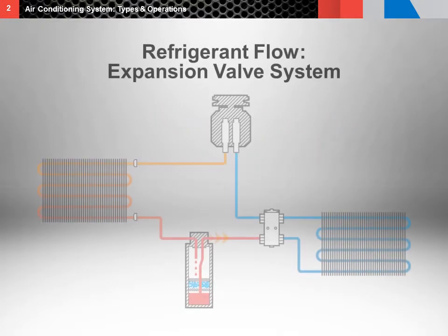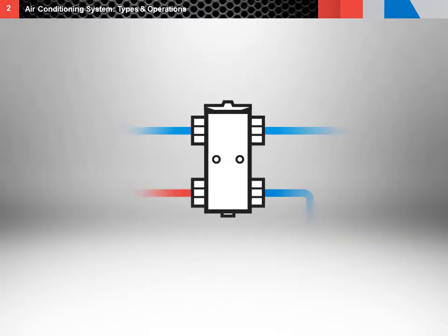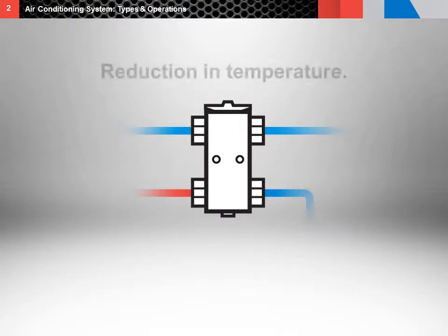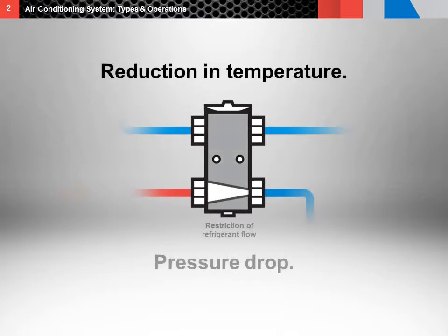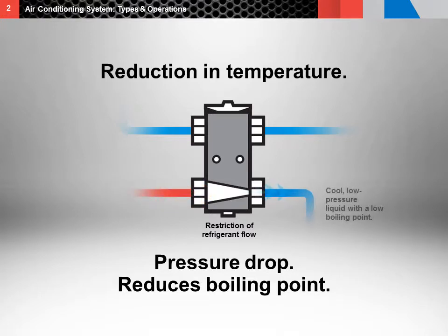The refrigerant flows from the outlet of the receiver dryer into the inlet of the expansion valve. As the refrigerant passes through the expansion valve, it changes from a hot, high pressure liquid to cold, low pressure liquid. The reduction in temperature is the direct result of the system pressure drop caused by the restriction of refrigerant flow. The lower pressure also reduces the boiling point and temperature of the refrigerant. The result is the refrigerant exits the expansion valve as a cool, low pressure liquid with a low boiling point.